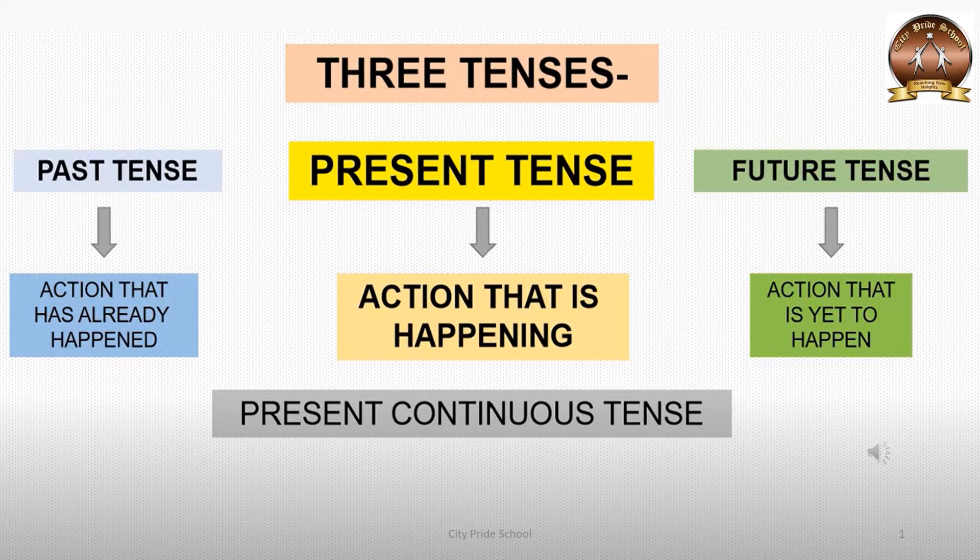Each tense has further four types. But in standard 3, we are going to learn two types of tenses — present continuous tense and past continuous tense. But today, we are going to learn only present continuous tense. Now we know what verbs are and what helping verbs are, so let's see what present continuous tense is.